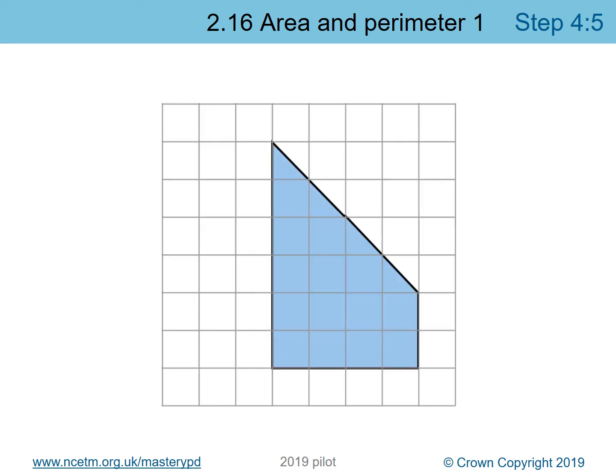What about this shape? It's a little tricky because it goes through half of some squares. We can make that easier by rearranging. Pause the video and count the squares. This shape has an area of sixteen square units. Well done.